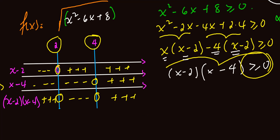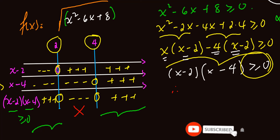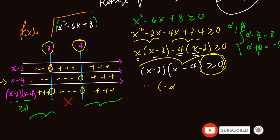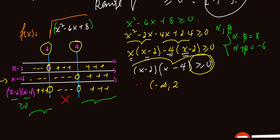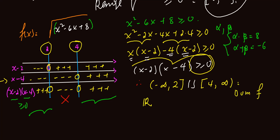The interval for which x minus 2 times x minus 4 is greater or equal to 0 is the first and third regions, discarding the middle interval. Therefore, the domain of the given function f of x equals square root of x squared minus 6x plus 8 is from minus infinity up to 2, with 2 included, union from 4 up to positive infinity. The open interval from 2 to 4 is excluded.